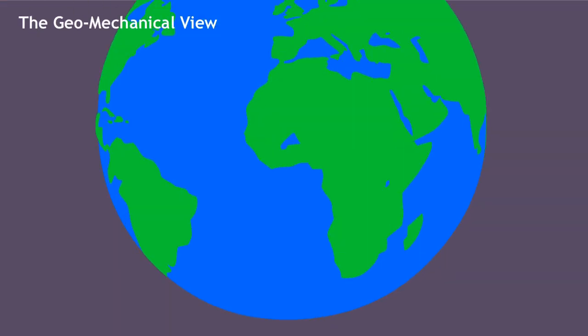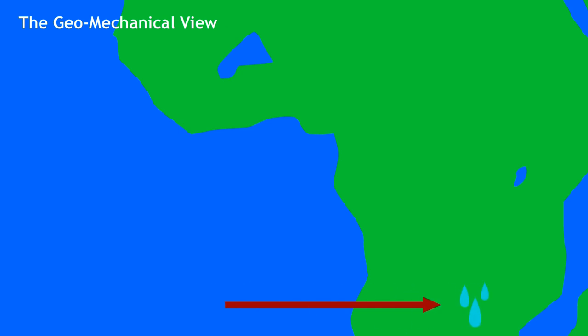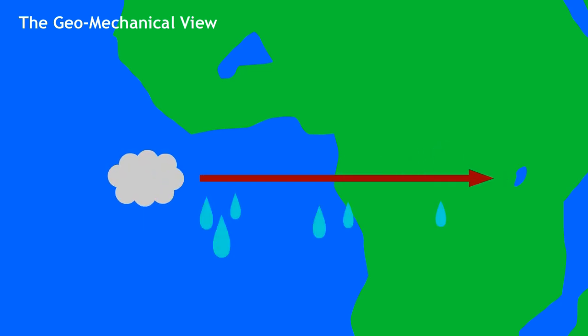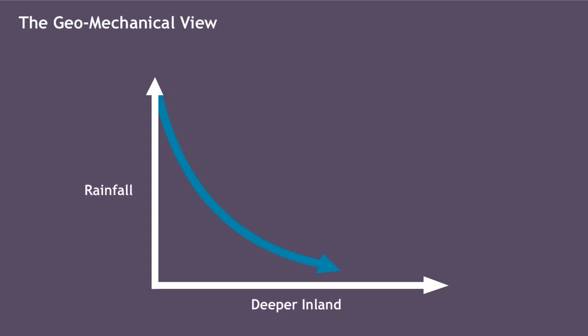According to the geomechanical view, moisture gets transferred inland when water vapor is carried from the ocean by winds. Because some of this water gets lost to precipitation, the deeper inland this air gets, the less moist it becomes. Therefore, deeper inland means less rainfall.